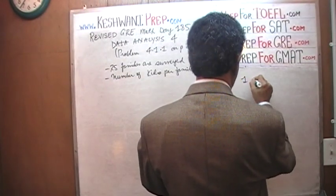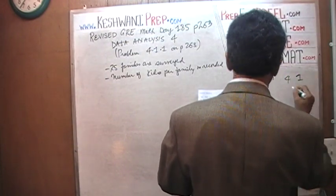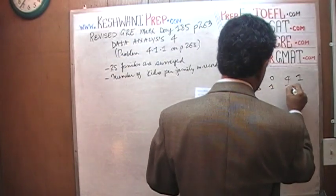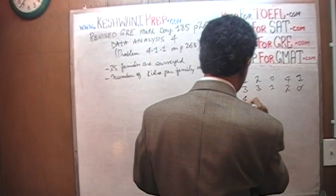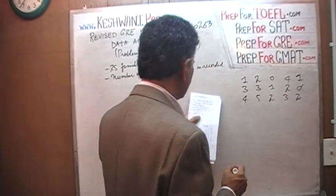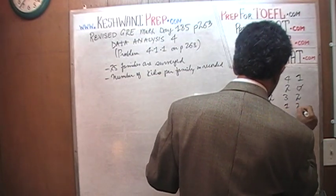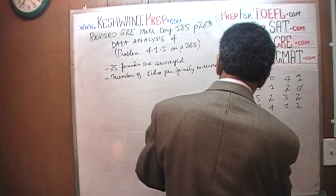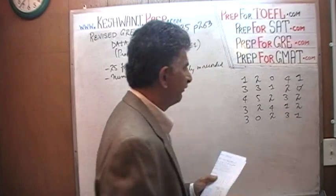The 25 data values are: 1, 2, 0, 4, 1; 1, 2, 0, 4, 1, 1; 3, 3, 1, 2, 0, 3, 3, 3, 1, 2; 0, 4, 5, 2, 3; 2, 3, 2, 3, 2, 2, 4, 4, 4, 3, 2, 2, 4, 3, 2, 4, 1, 2; and finally 3, 0, 2, 3, 1, 3, 0, 2, 3, 1. So these are the 25 observations.